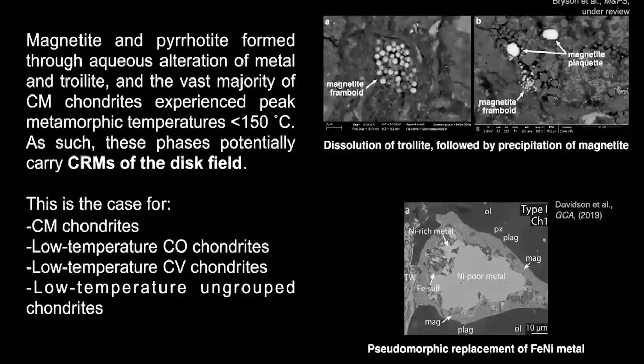So this means that given that these magnetic phases form through aqueous alteration and these meteorites did not experience high peak temperatures, we expect they recorded chemical remanent magnetizations of the disk field or CRMs. And this is the case for any low temperature chondrite, the CM chondrites, CO chondrites, CV chondrites, and any ungrouped low temperature chondrites as well.